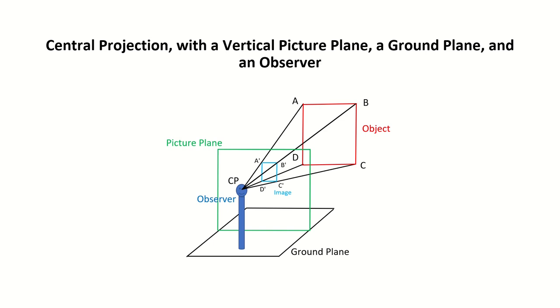Central projection consists of a ground plane, a picture plane orthogonal to the ground plane, a center of projection or an observer, the image of an object on the picture plane, and the object itself on the other side of the picture plane.